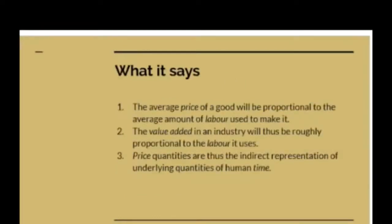What does it say? At its simplest, it says that the average price of a good will be proportional to the average labour used to make it. And if you look at a whole industry, the value added in an industry will be roughly proportional to the labour that the industry uses. Price quantities, therefore, are seen as the indirect representation of underlying quantities of human time. This is the basic insight of the labour theory of value from Adam Smith onwards.